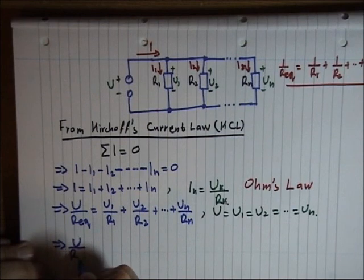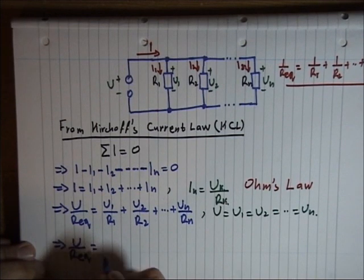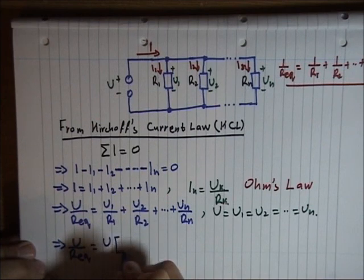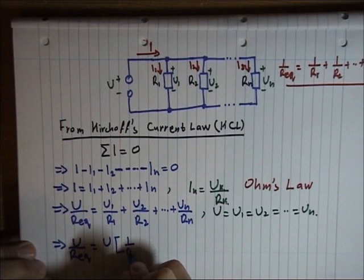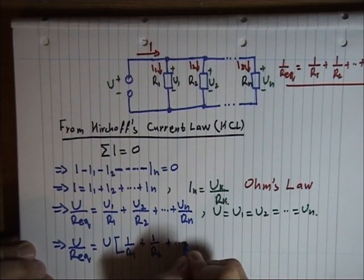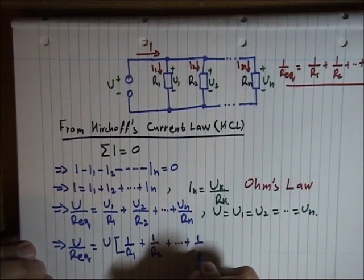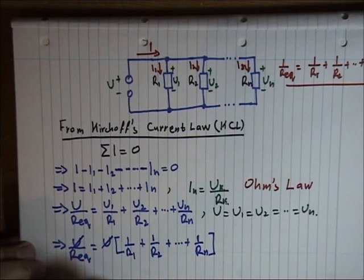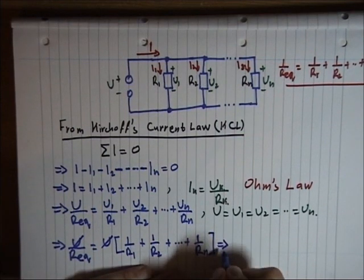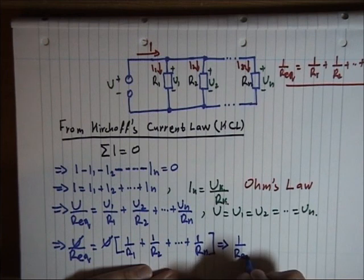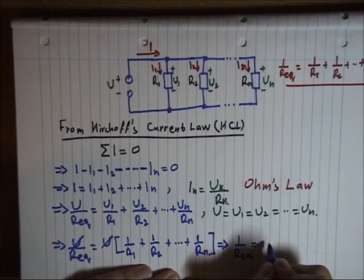Substituting this into our equation, we have U over R equivalent equals U over R1 plus U over R2 plus U over Rn. And so if we simplify, we are left that 1 over R equivalent is equal to the sum